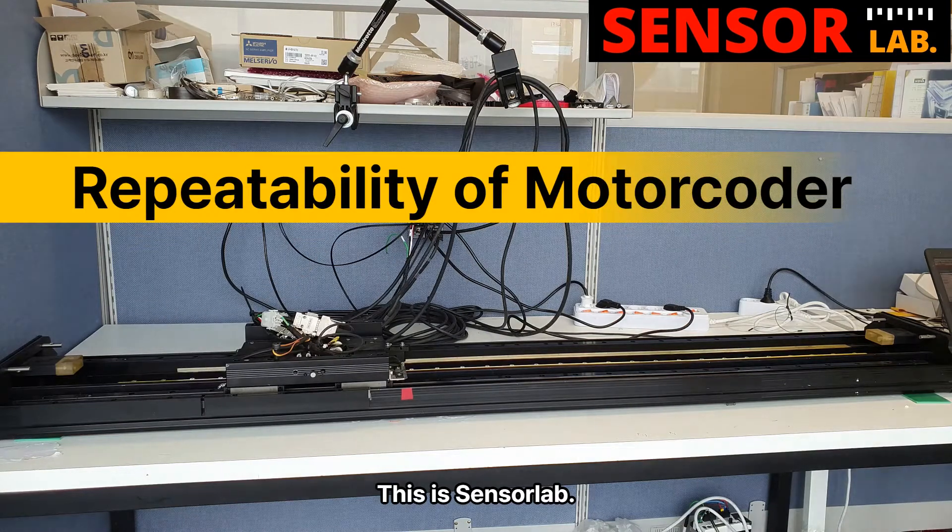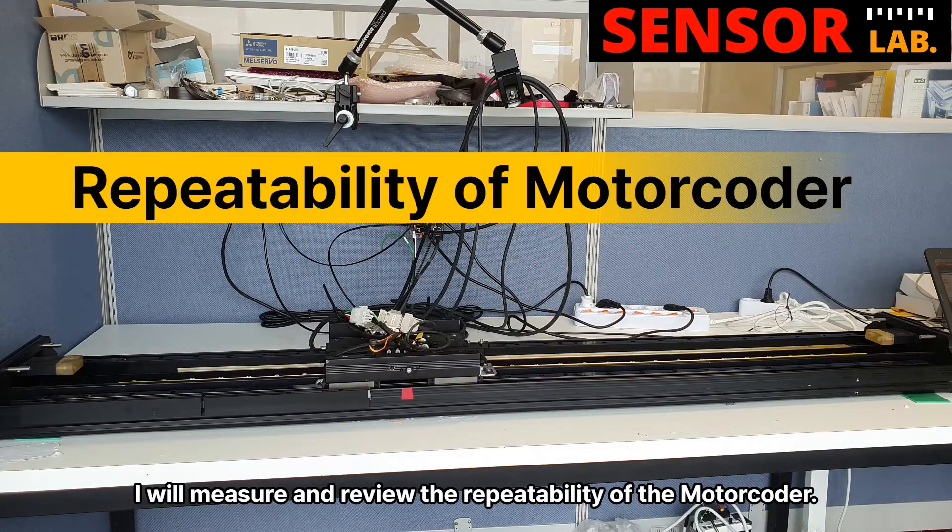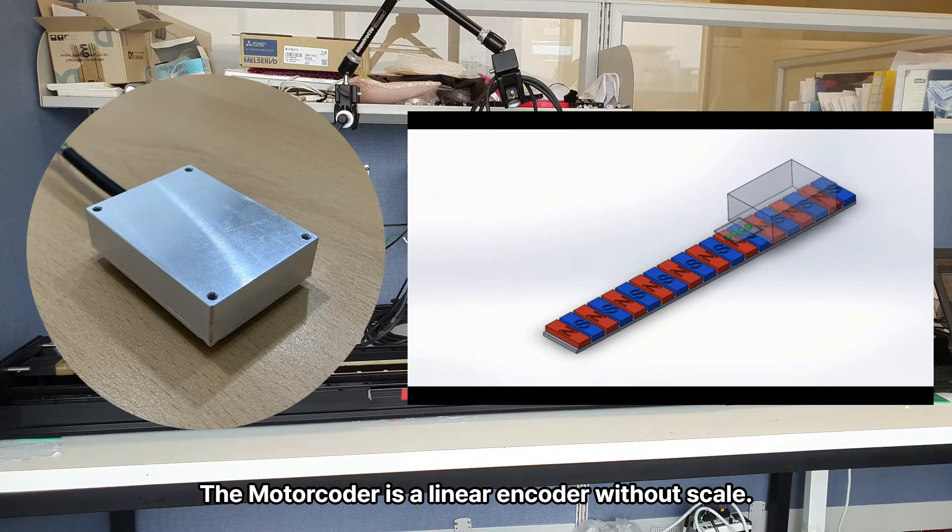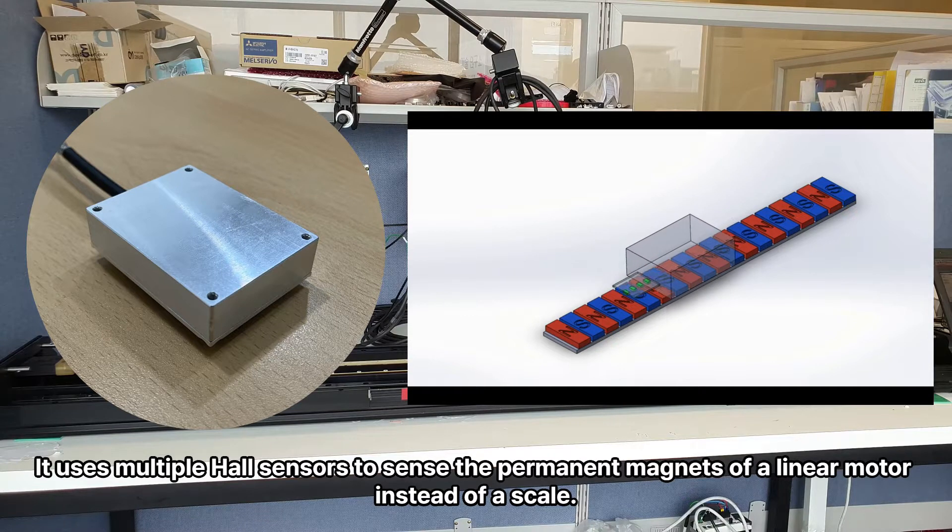Hi. This is SensorLab. I will measure and review the repeatability of the motor coder. The motor coder is a linear encoder without scale. It uses multiple hall sensors to sense the permanent magnets of a linear motor instead of a scale.